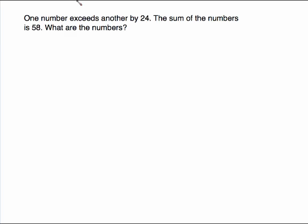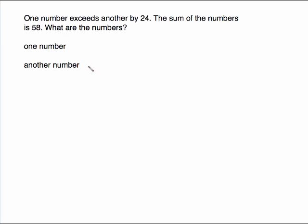This video will show you how to do certain types of word problems that use one variable. These word problems can be set up in some cases with two variables, but this is going to be the one variable method. When you read the problem: one number exceeds another by 24, the sum of the numbers is 58 — what are the numbers? That tells us we need to name these variables. If we were doing two variables we could call one x and one y, but we're going to use one variable here.